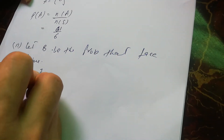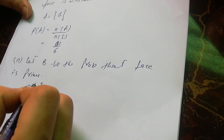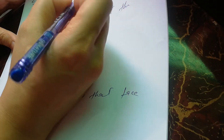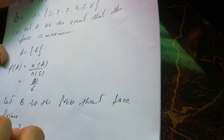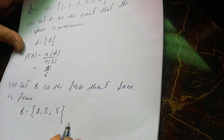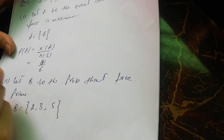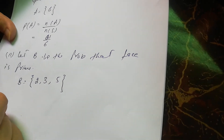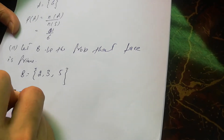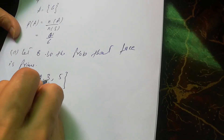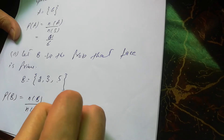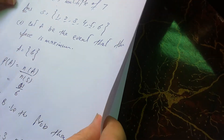The prime numbers are 2, 3, and 5. Note that 1 is not a prime number and it is not a composite number either. So B = {2, 3, 5}. The probability of B is n(B) divided by n(S), which is 3 over 6, equal to 1/2.